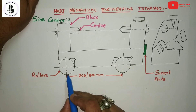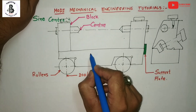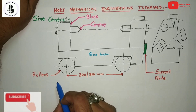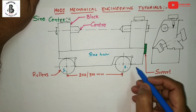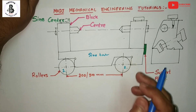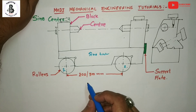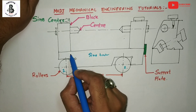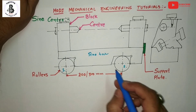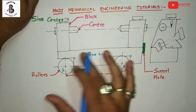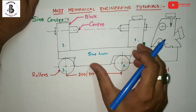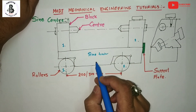Looking at the structure, the sine bar has two rollers of the same diameter — roller number one and roller number two — which are situated between two centers, around 200 or 300 mm apart depending on requirements. On the sine bar, two blocks are arranged so they can be adjusted and rigidly clamped in any position, and these blocks are rigidly attached onto the sine bar with the centers.